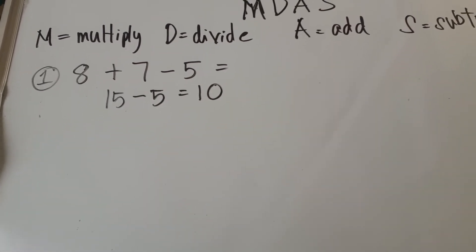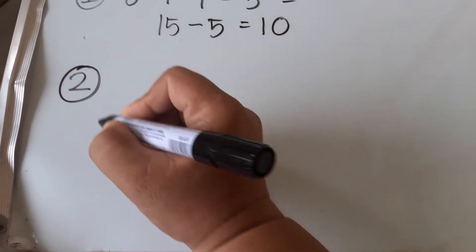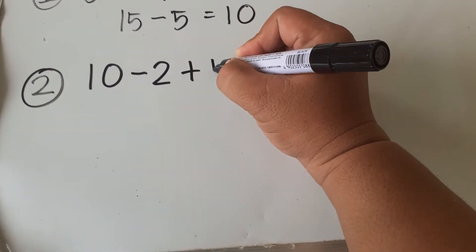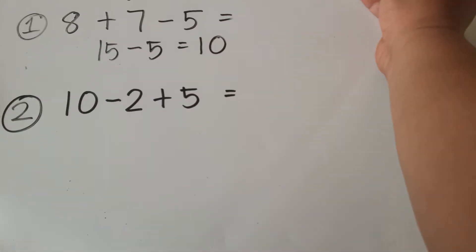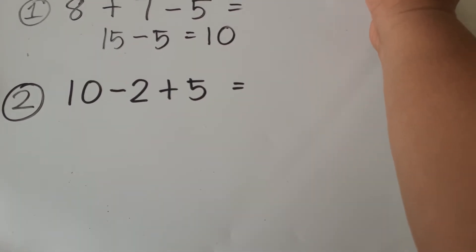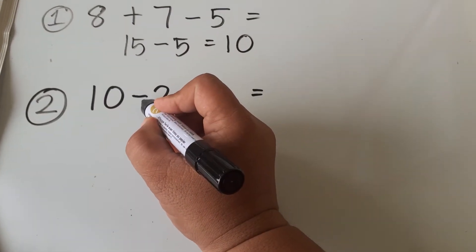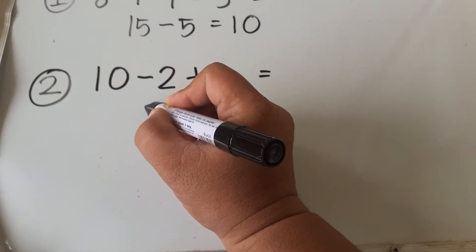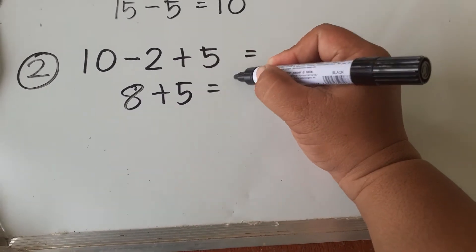But how about if we have the expression 10 minus 2 plus 5? What will be the answer? In M-DAS, either add or subtract — whichever comes first. Since subtract comes first before add, we must subtract first: 10 minus 2 equals 8, then 8 plus 5, so the answer is equal to 13.